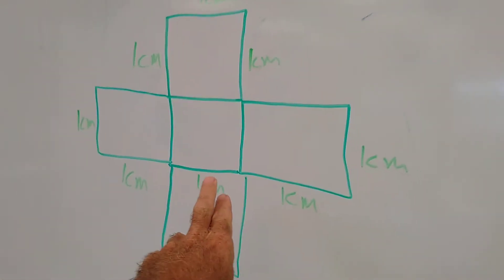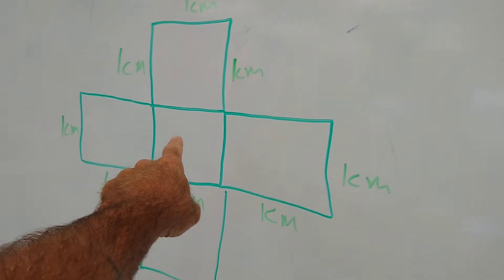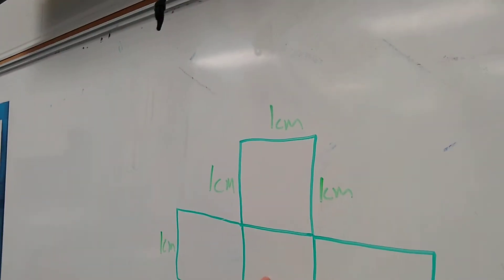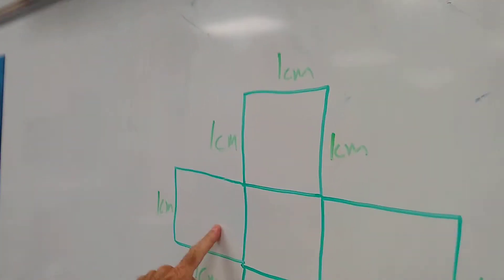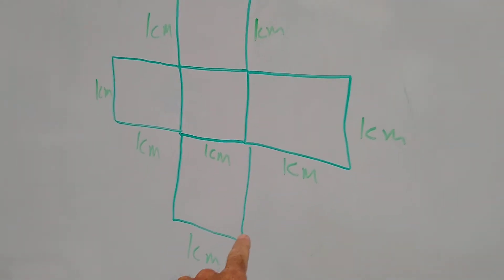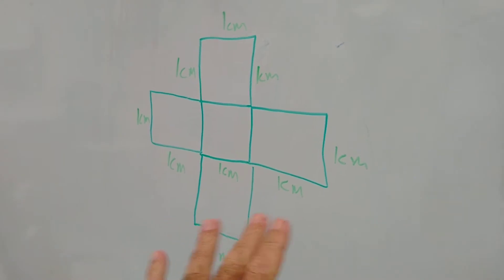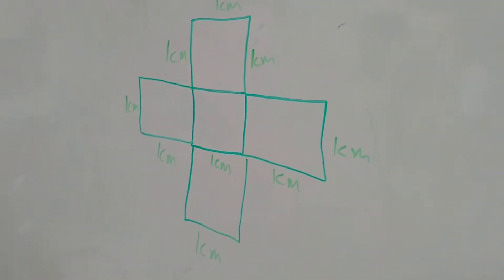So we took a meter stick and you can make a one centimeter square, and then if you make other squares around it, like this, in that pattern, then you're going to be able to make a one centimeter cube. It's like an origami type of thing.